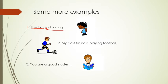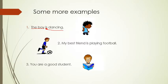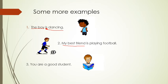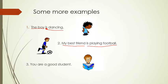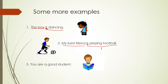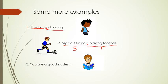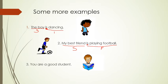Now let's see the second example: 'My best friend is playing football.' Who is the sentence about? The sentence is about my best friend. What information do we get about the subject? That he is playing football. A predicate generally begins with a verb, and the verb here is 'is'. So 'is playing football' is the predicate, whereas 'my best friend' is the subject.